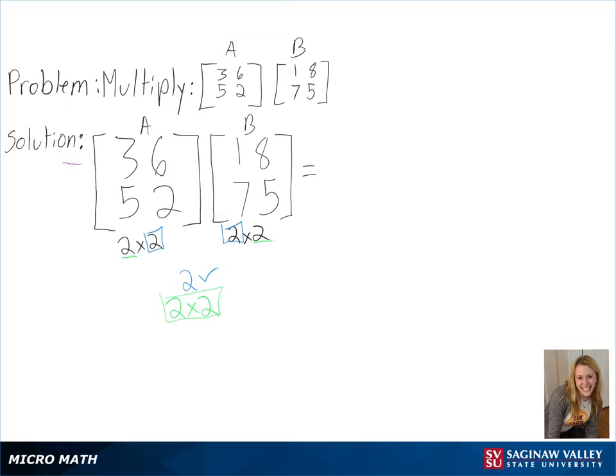To do this, we will be multiplying the rows from matrix A by the columns from matrix B and adding them as we go.